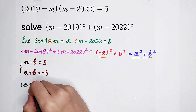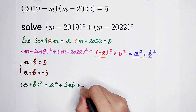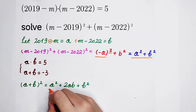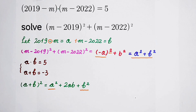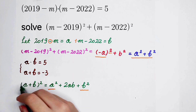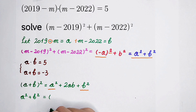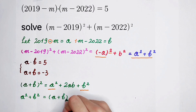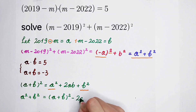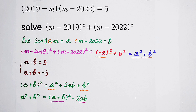Using that formula, I rearrange to isolate a squared plus b squared on the left hand side. Moving the 2ab term to the right hand side gives: a squared plus b squared equals (a plus b) all squared minus 2 times ab. We know a plus b and a times b, so we can substitute directly.